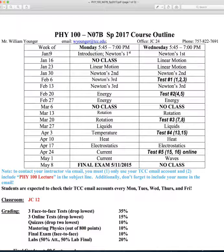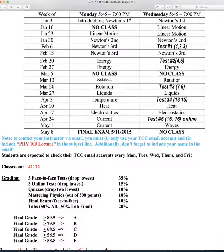This is a tentative schedule of how the course is supposed to go. January 9th is the first day of classes — that's a Monday. Our class meets on Monday and Wednesday, so this will be the 9th, this will be the 11th. You can see what chapters we're going to cover. I try to have a test every two chapters; the first test will actually include three chapters, but all the other ones will be two chapters each. Some tests will be online, some face-to-face. The final exam date shown is actually wrong — the correct date is May 8th at 5 p.m.